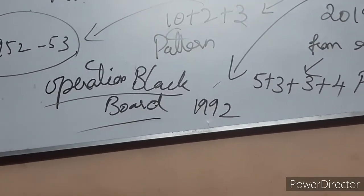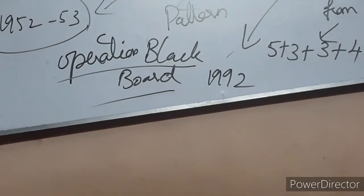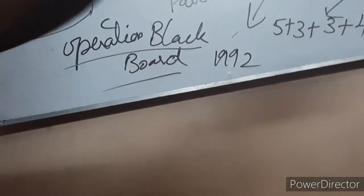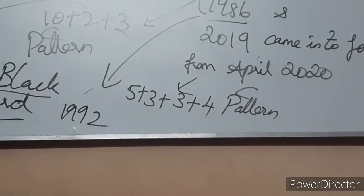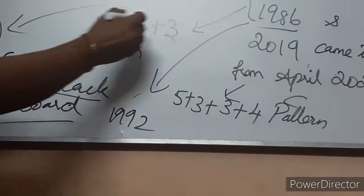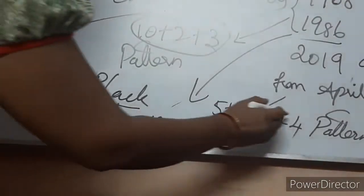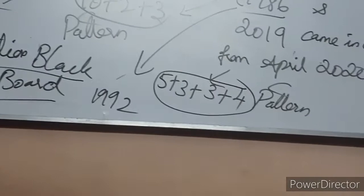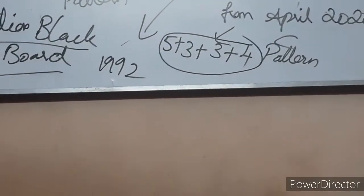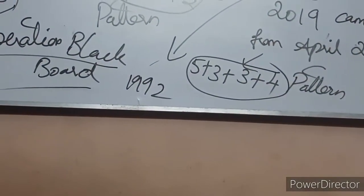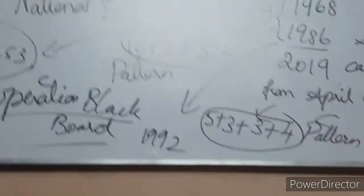At present, in 2019, a new education policy came and it came into force from April 2020. The pattern previously followed was 10+2+3, but the new education policy of 2019 changed it to 5+3+3+4. Although it was formed in 2019 itself, it came into force from April 2020.